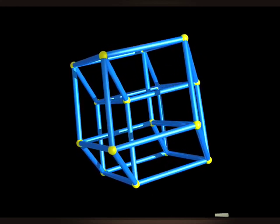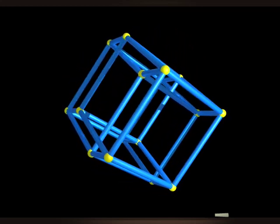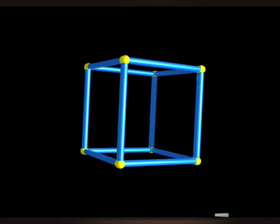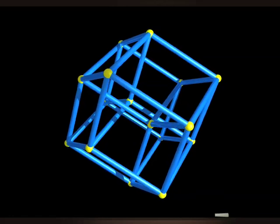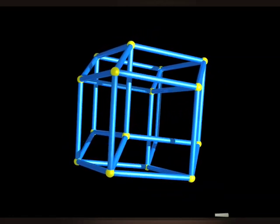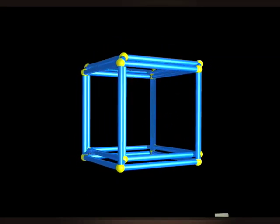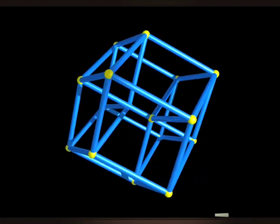Here is the hypercube. Of course, it's spinning in space, so that we can appreciate all the details. Notice, for instance, that the hypercube has 16 vertices.